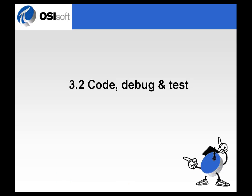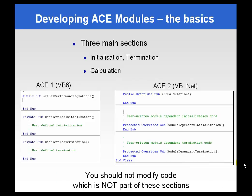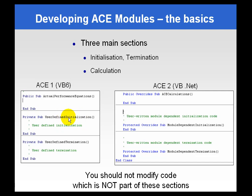Let's talk about some of the unique features of coding, debugging, and testing in the ACE module. There are three main sections in the ACE-generated code, whether you're using Visual Basic 6 or Visual Basic .NET. They basically have an area for calculation — in VB6 it's called Actual Performance Equations, and in .NET it's called ACE Calculations. That's the subroutine where you'll be placing most or all of your code. We also have two other small sections for code when the module initializes or terminates, available in both VB6 and VBStudio environments.